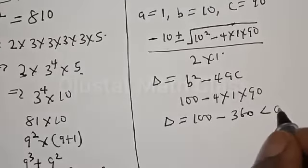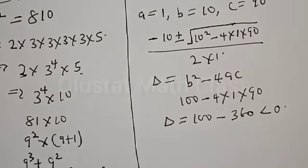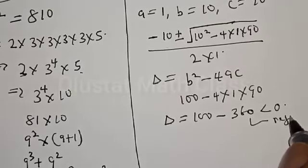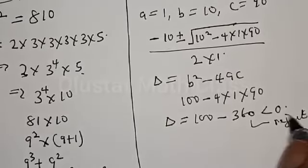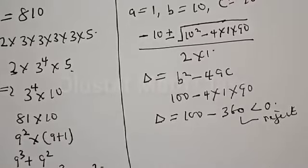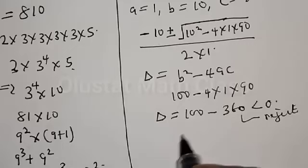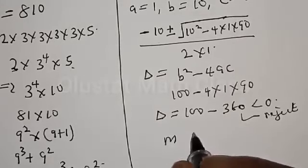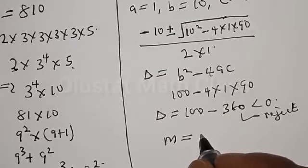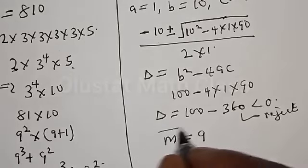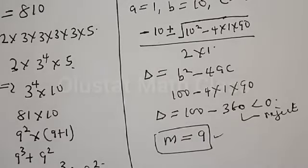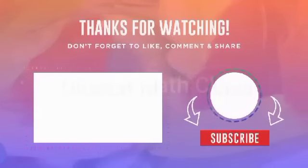The discriminant is less than 0, so we reject this quadratic solution. Therefore, the only root we have is M equal to 9. If you have enjoyed the class, please don't forget to like, share, comment, and subscribe. Thank you.